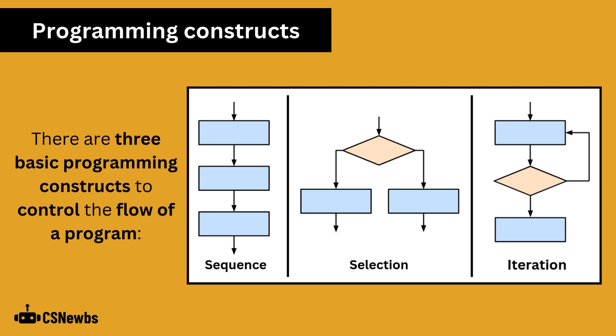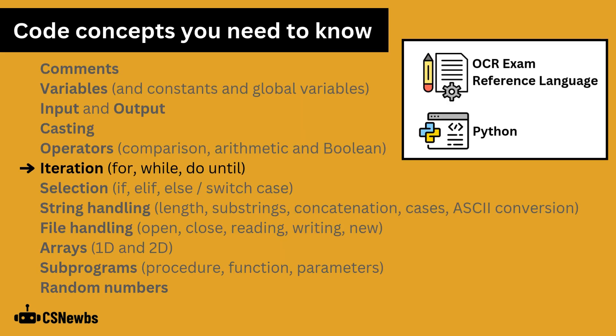There are three basic programming constructs to control the flow of a program. Iteration is when code is repeated through the use of a loop. There are three types of loop that you need to know, although only two of these can actually be used in Python.